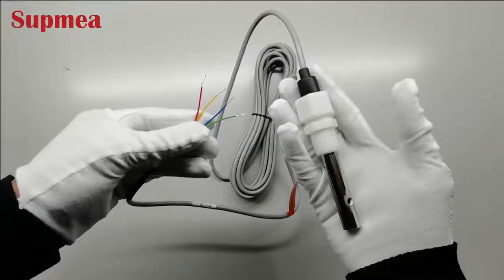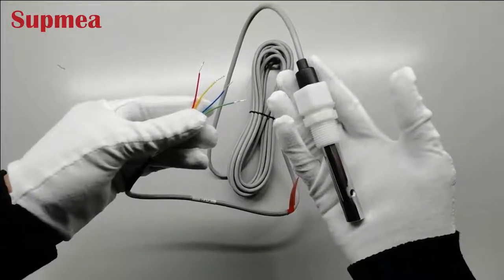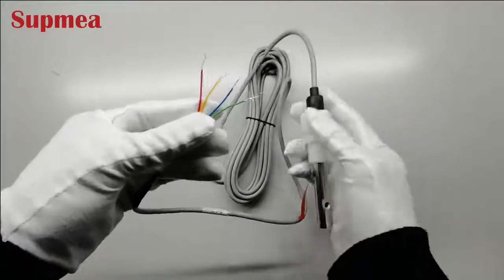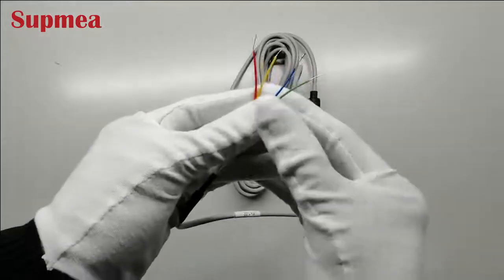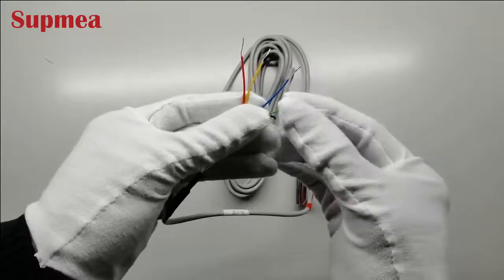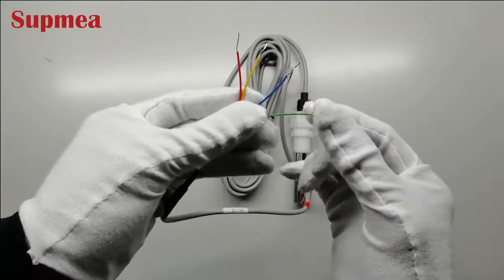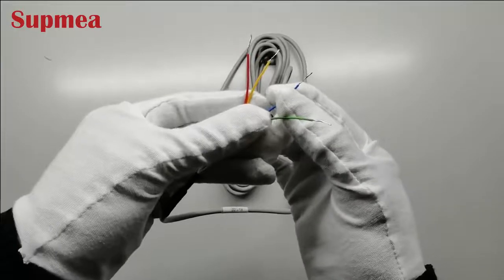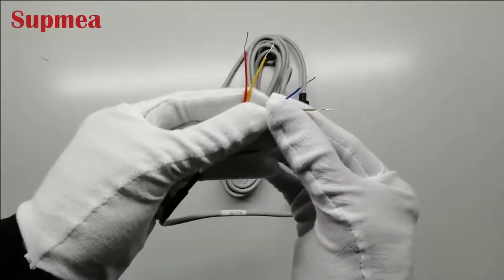This is our conductivity sensor. Our conductivity sensor has four wires in different colors. First, it indicates the measuring wire, the reference wire, the yellow and the red is for temperature.